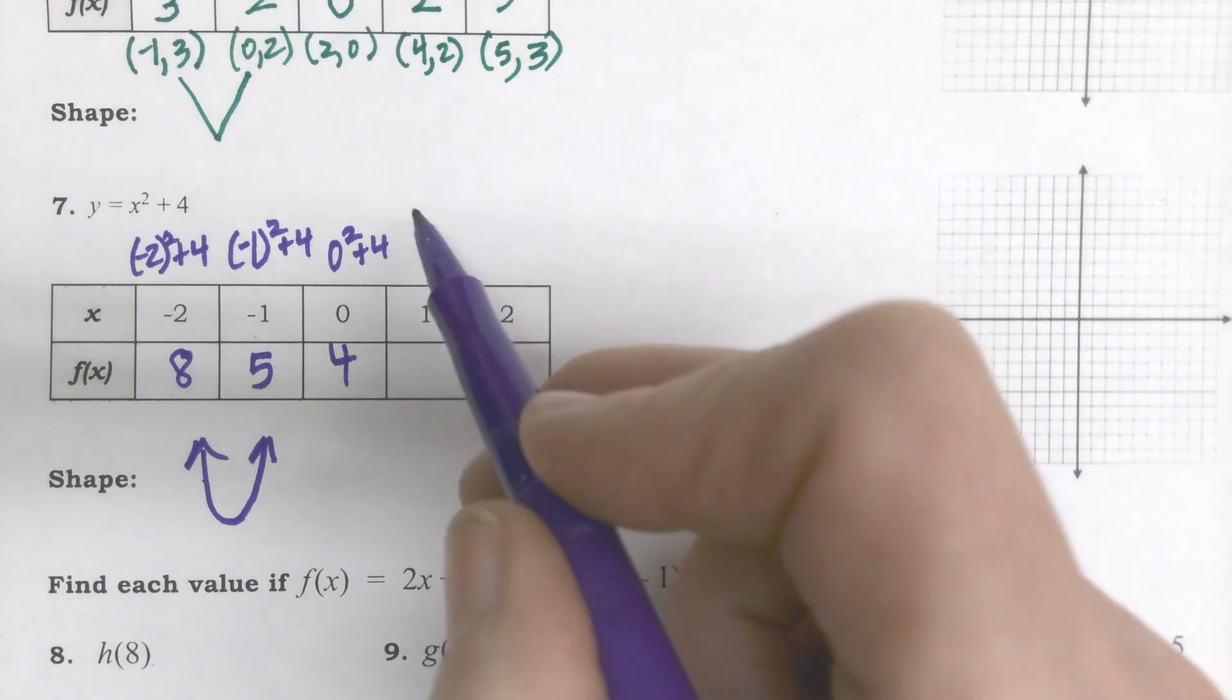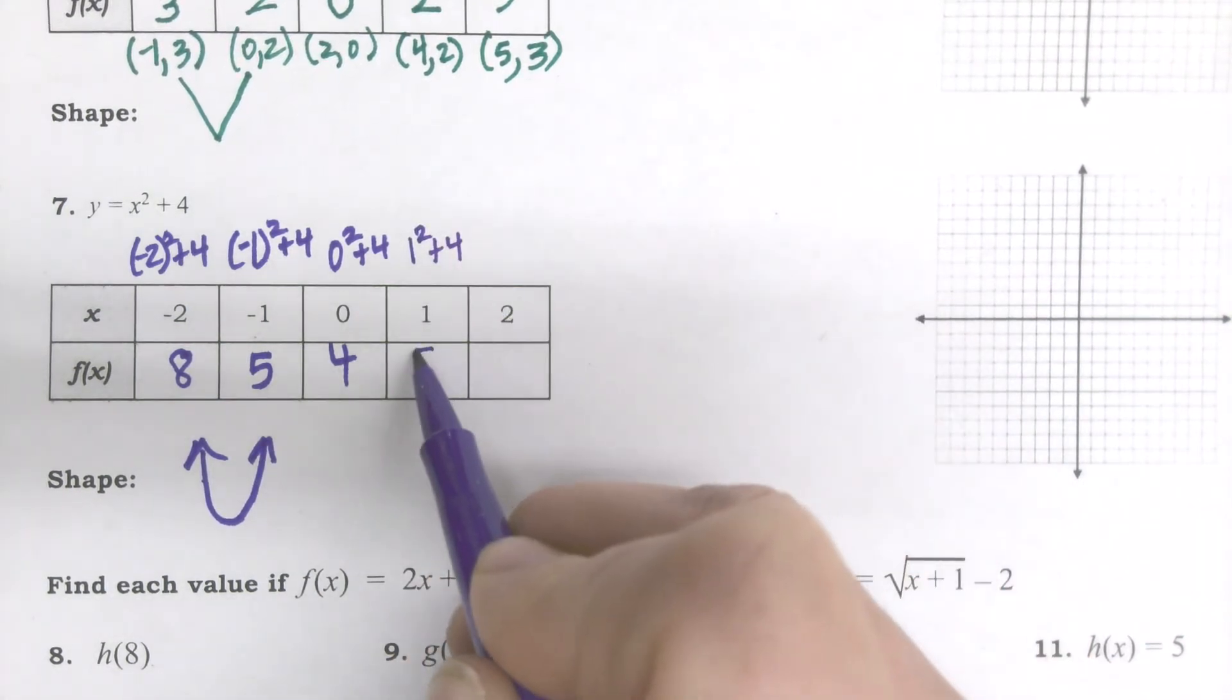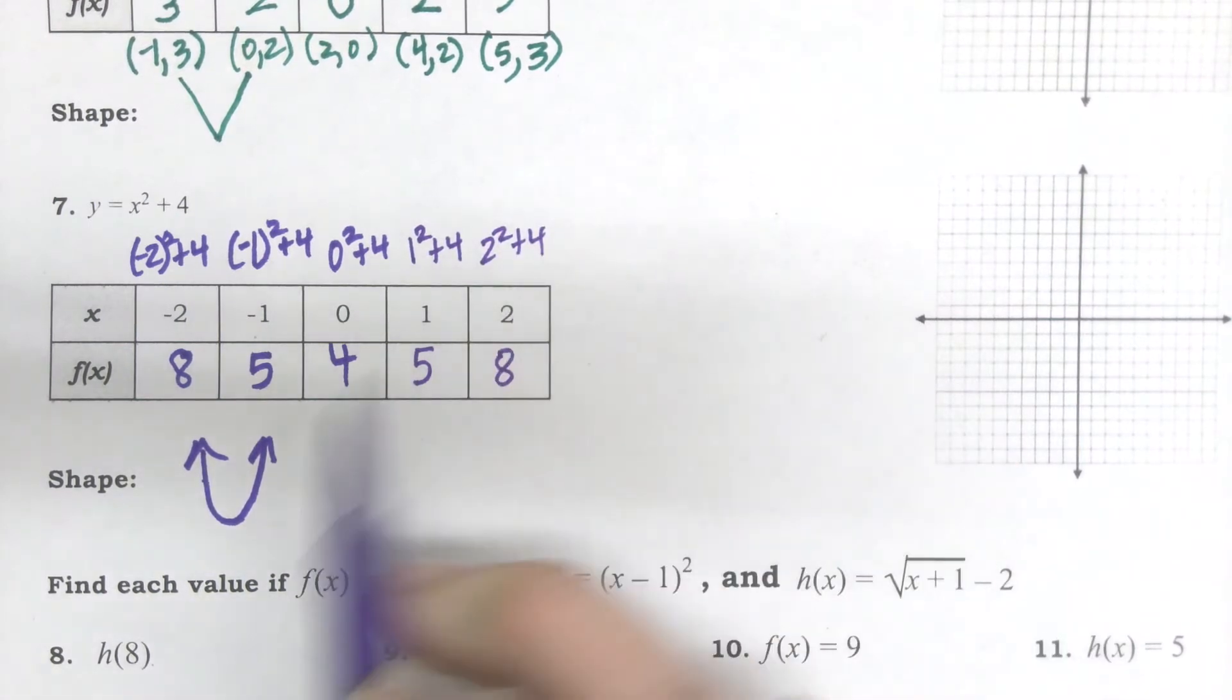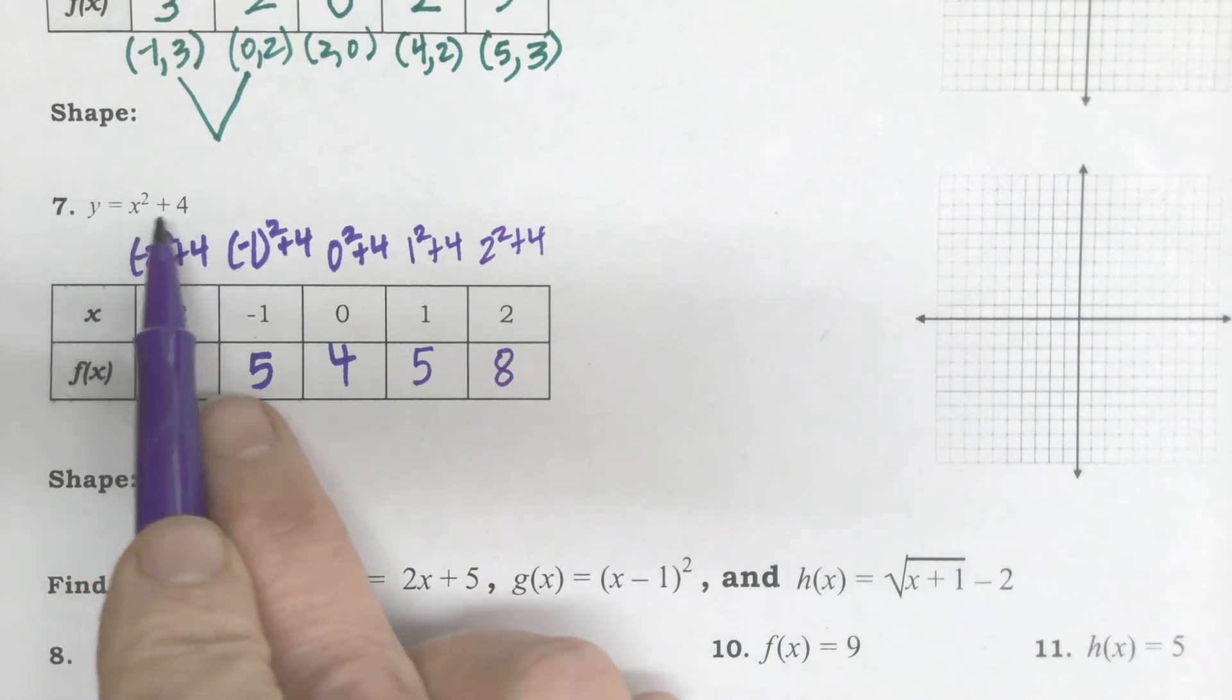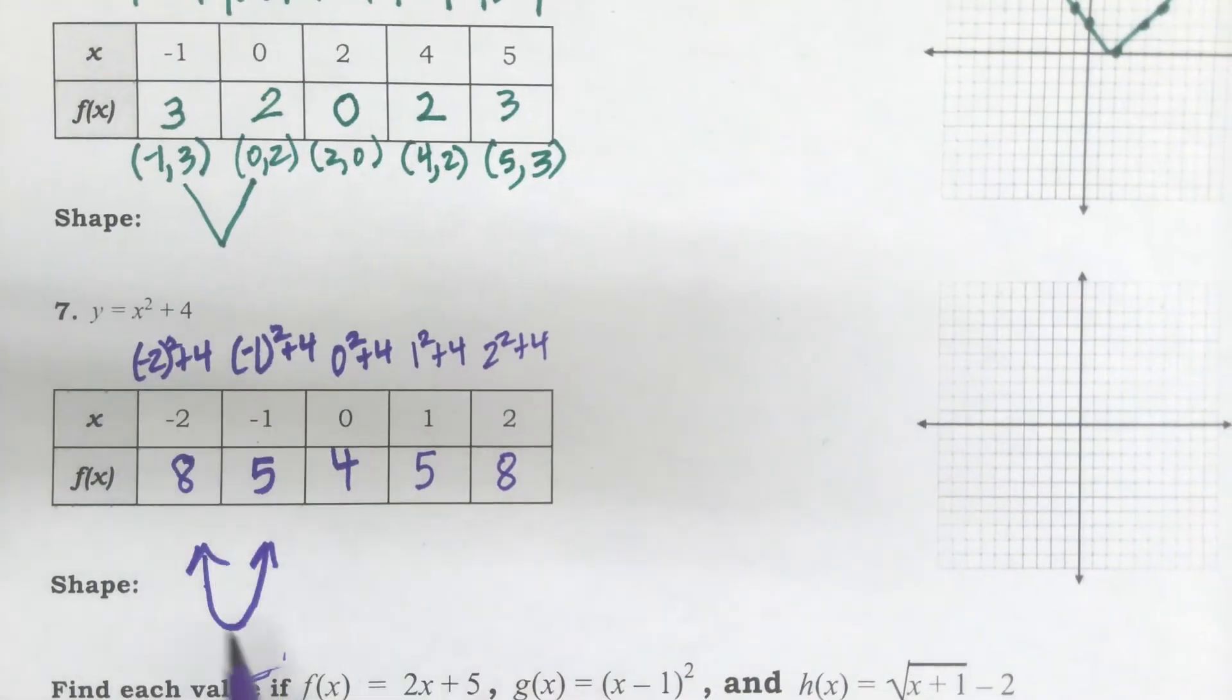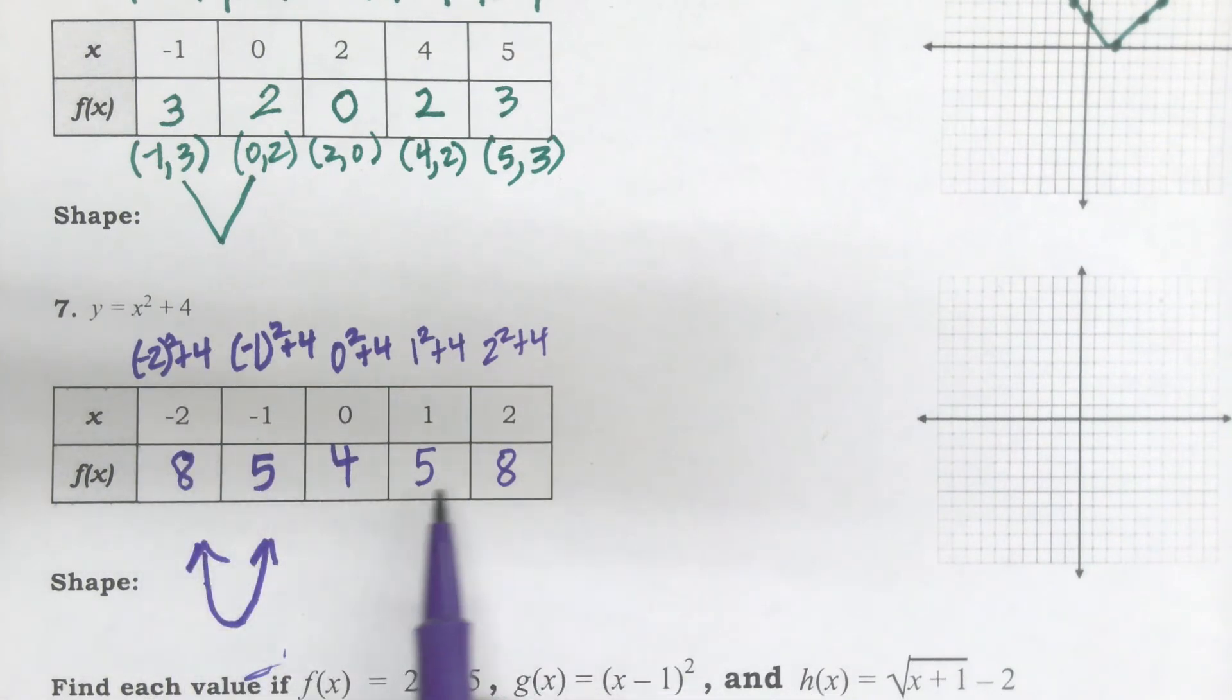Make sure you put those on there before you put the square on it on your calculator. Otherwise, it won't do the negative part of it squared. So our next one is 1 squared plus 4 or 5 and 2 squared plus 4 or 8.